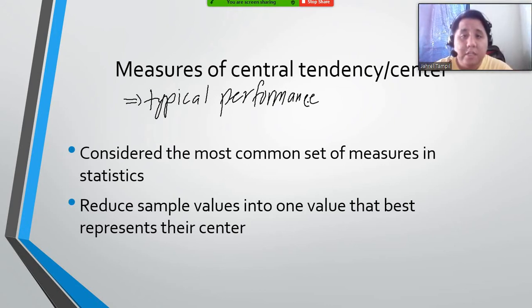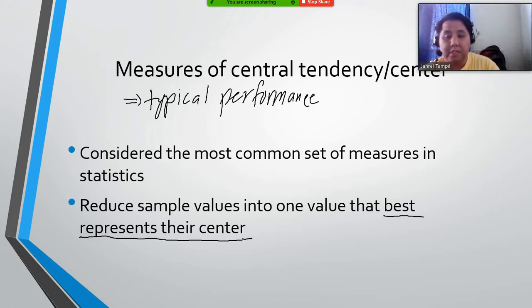The measures of central tendency tend to give the typical performance of our data set, which is related to the phrase that it's the one that best represents their center. So whatever the center of the data set is, that is what the typical performance of the data set would be.